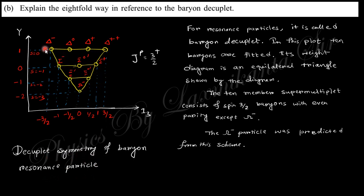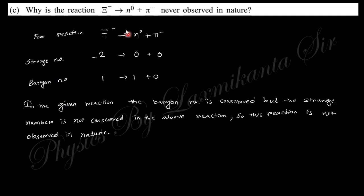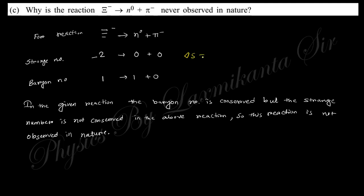The eightfold way in reference to the baryon octet: the eightfold way gives information about the baryon octet, which you need to draw and write down. Next, why is a particular reaction never observed? In that reaction, the strangeness number of the initial particle is −2 and of the product is 0, so strangeness is not conserved. The baryon number is conserved, but since strangeness is not conserved — meaning ΔS ≠ 0 — this reaction cannot be observed.